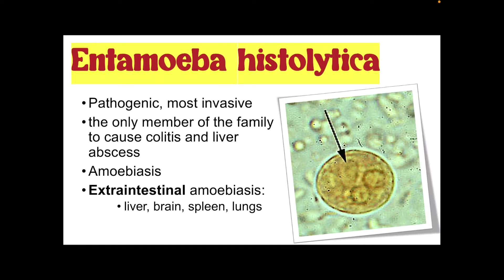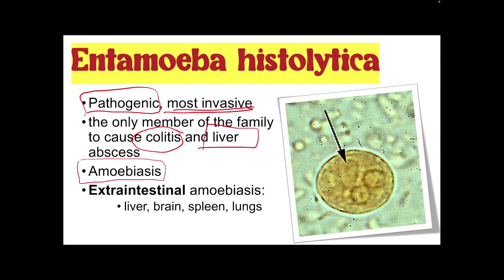Entamoeba histolytica is the only pathogenic member of the Sarcodina group and is the most invasive. It will not only affect the intestine but can also infect the liver, lungs, or even the brain and other organs. It is the only member of the family to cause colitis — inflammation of the colon — and could infect the liver causing liver abscess. The disease is called amoebiasis.